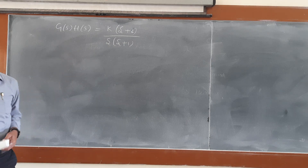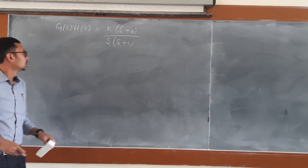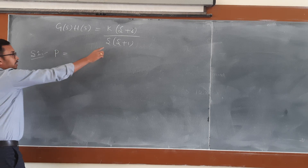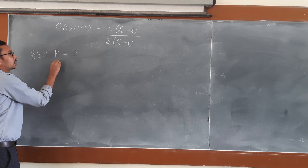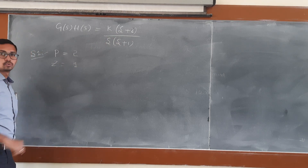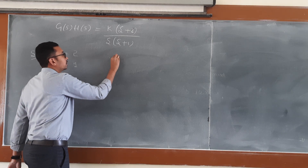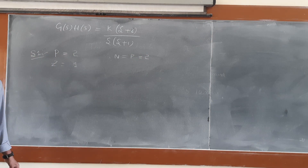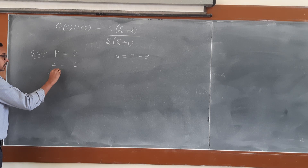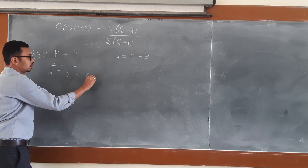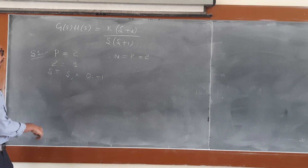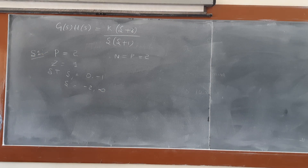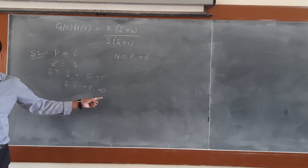Let us start another problem on root locus. This is a problem in GMM. Step number 1: get the general information. Number of poles, that is the denominator terms, is equal to 2. Number of zeros, the numerator term, is equal to 1. Therefore, number of branches equals number of poles, which is 2. Starting points of the branches are s = 0 and s = -1. Terminating points are s = -2 and infinity — one branch ends at -2, another at infinity.